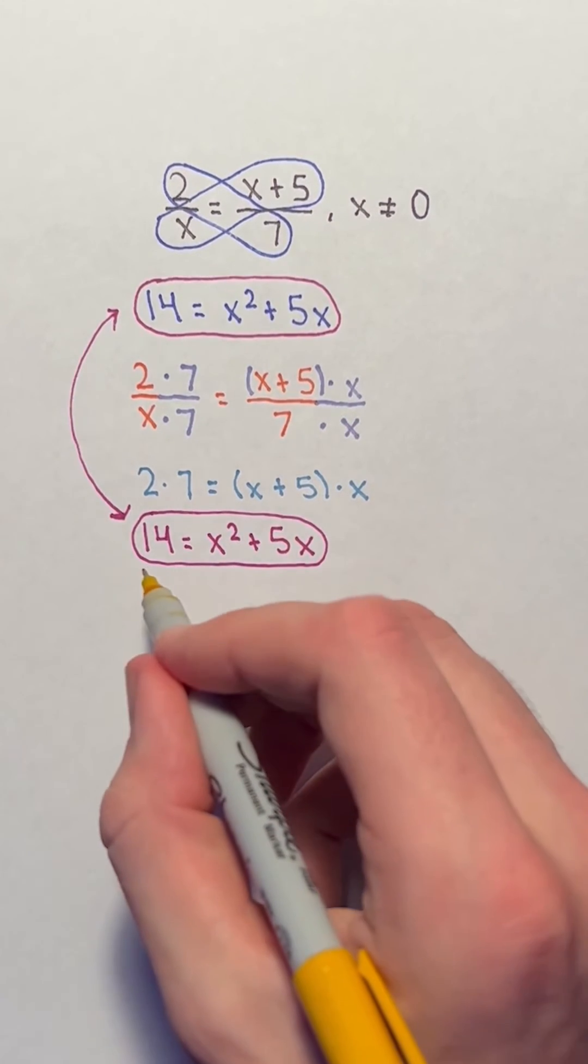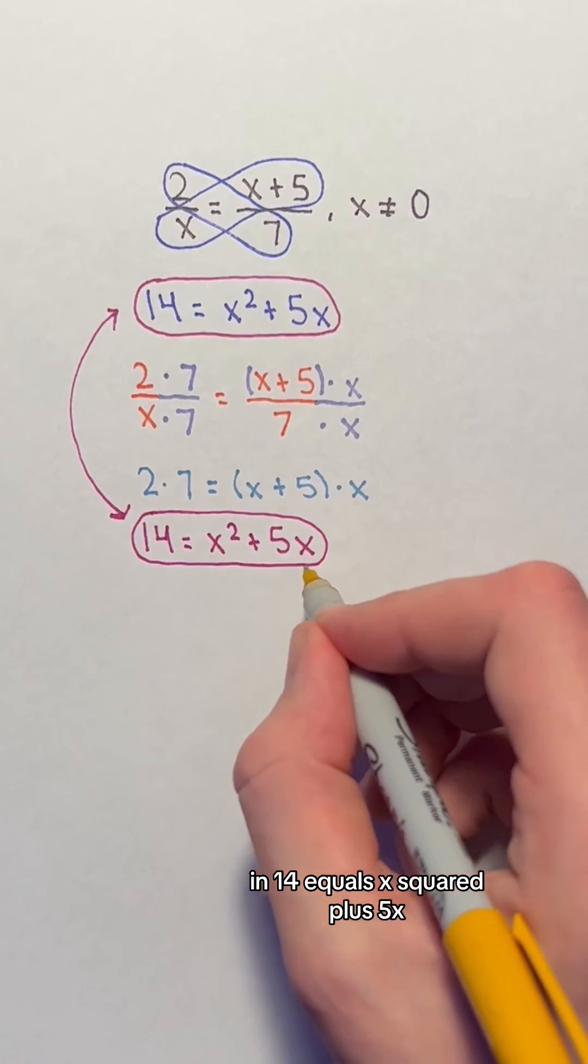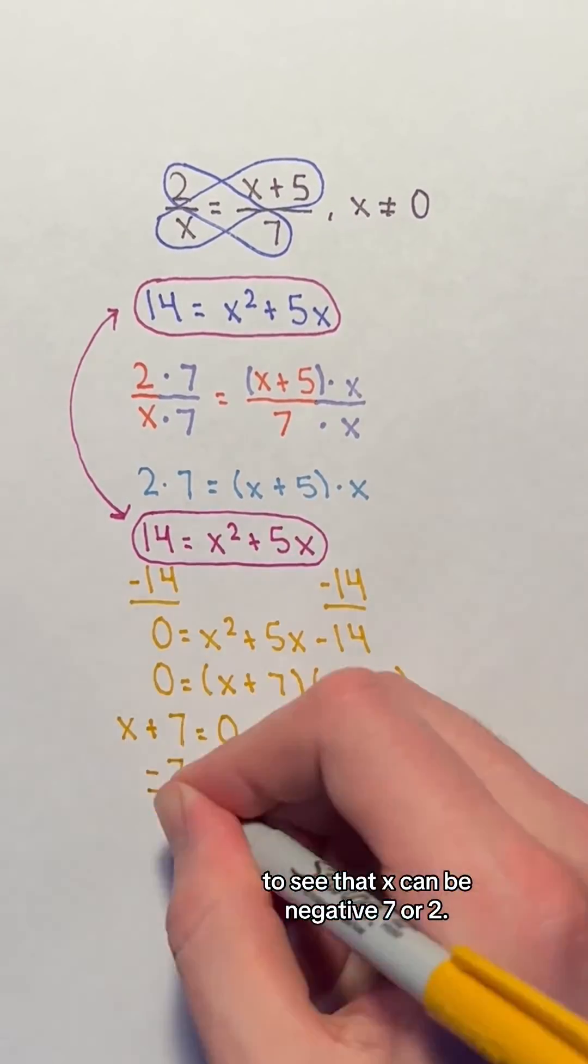In the example, we can solve for x in 14 equals x squared plus 5x to see that x can be negative 7 or 2.